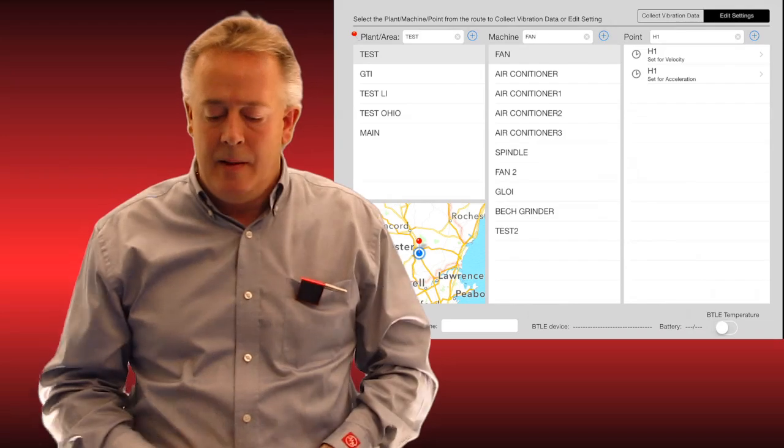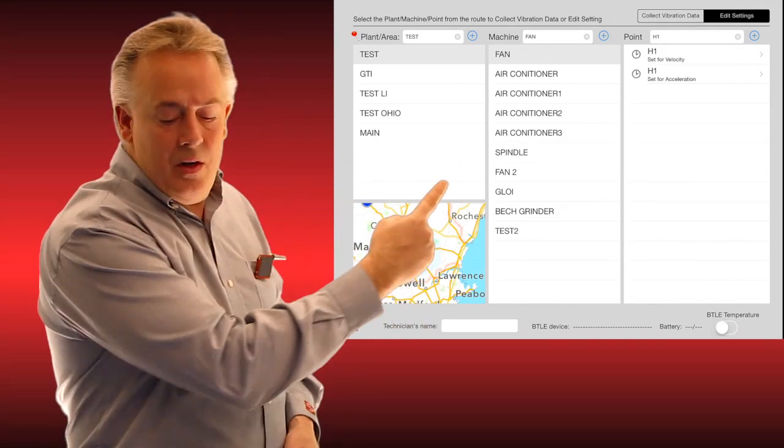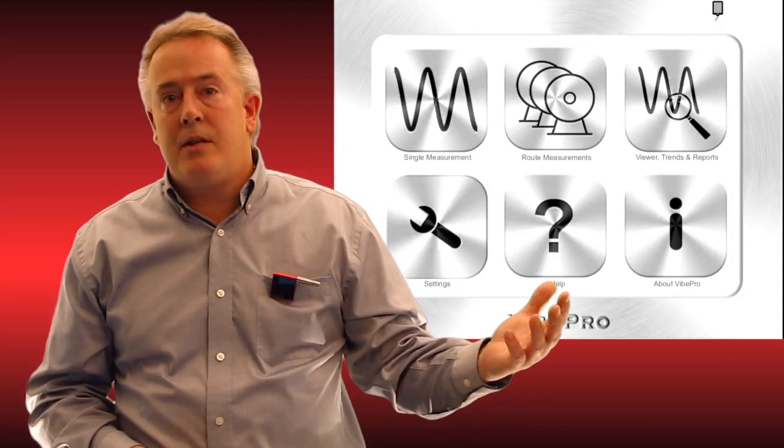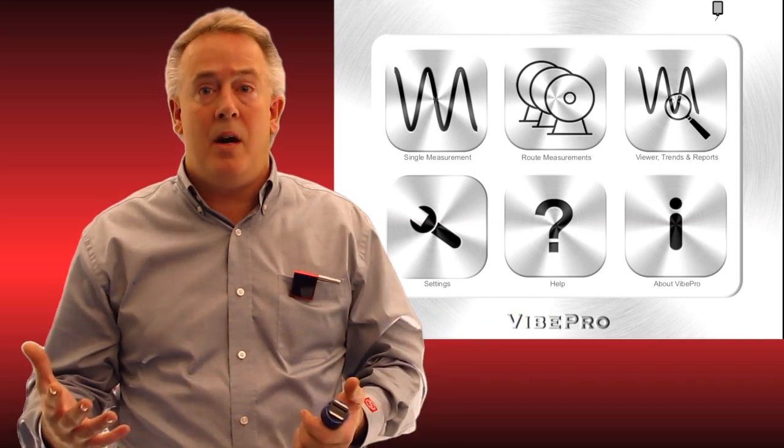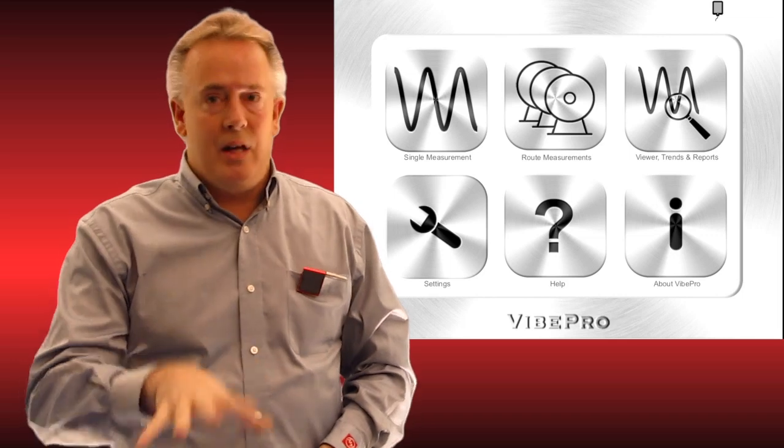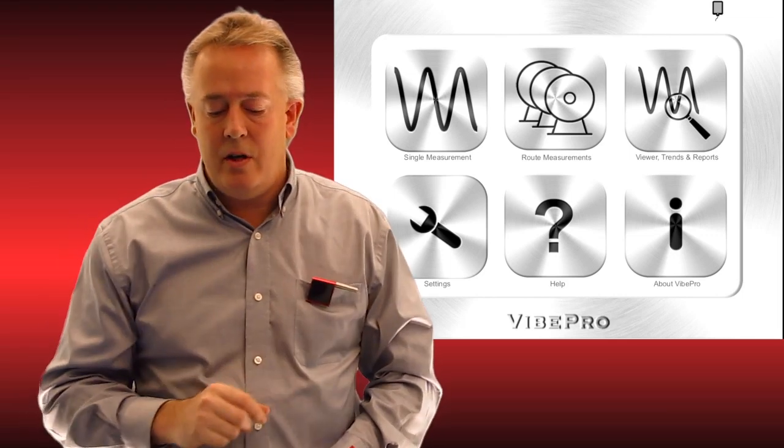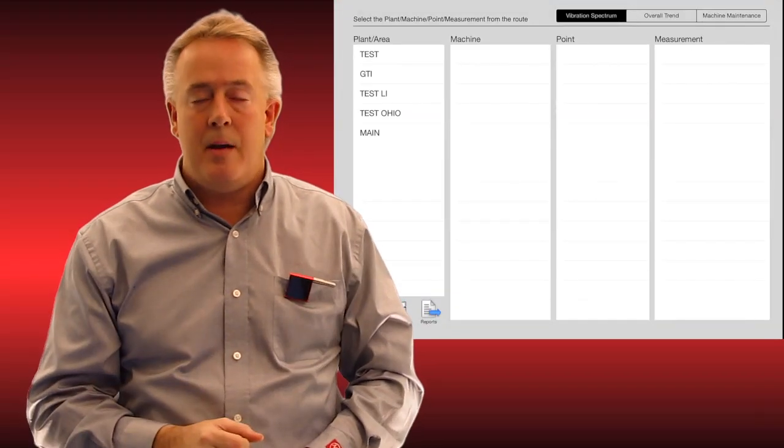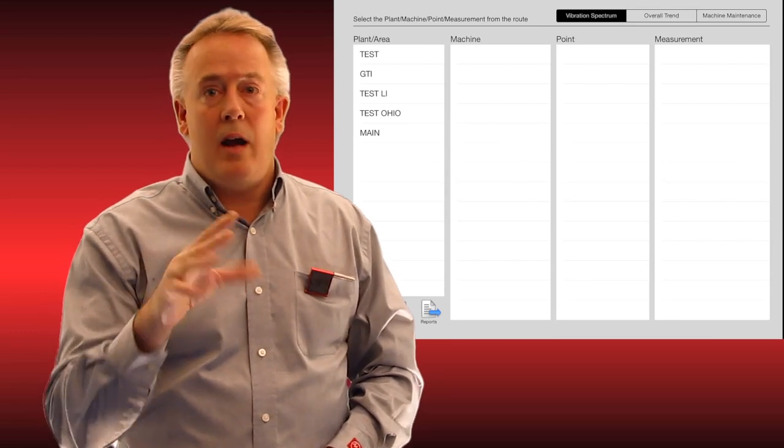Let me back out of here. You can see on the main window I also have the viewer. Well, anybody that's collecting routes and data, we know you have to post-process. You need to have a viewer. We have not one but we have two. We have the iPad, which is going to be what I'm going to show you here. I'm going to open it up, you're going to see the same hierarchy.